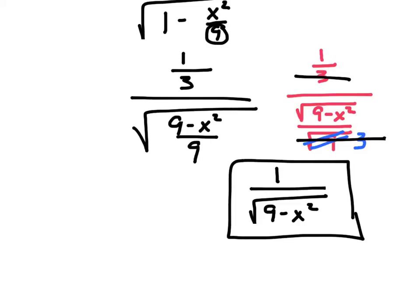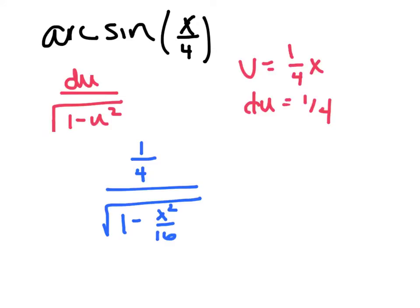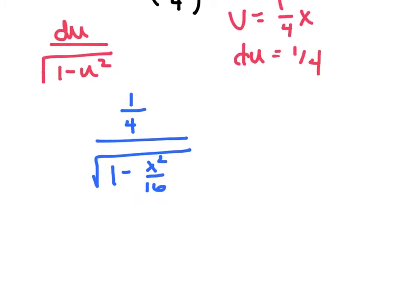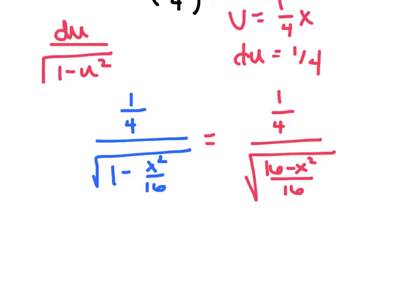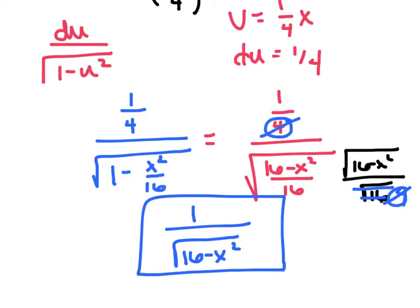Let's practice one more: arcsin(x/4). Pause it and try it yourself before comparing. My u is 1/4 x, my du is 1/4. Substituting in: 1/4 over the square root of 16 minus x² all over 16. Separating the radical gives square root of (16 minus x²) over square root of 16, where the square root of 16 is 4. The denominators match and cancel, giving 1 over the square root of 16 minus x².